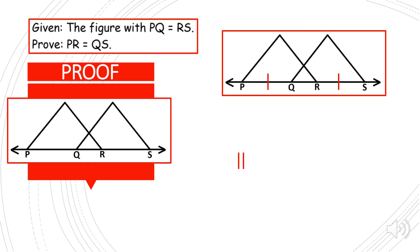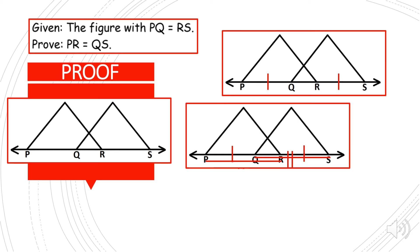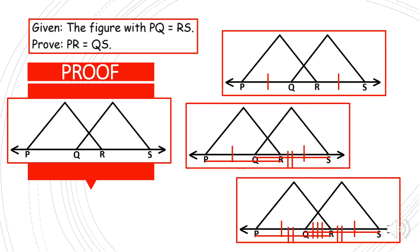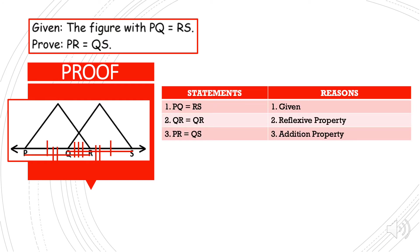Now, as you can see, we have to prove that PR is congruent to QS, or PR is equal to QS. We can do this because QR is congruent to itself. So here is the proof. First statement: PQ is equal to RS, given. Statement two: QR is equal to QR by reflexive property. Statement number three: PR is equal to QS by the addition property. QED.